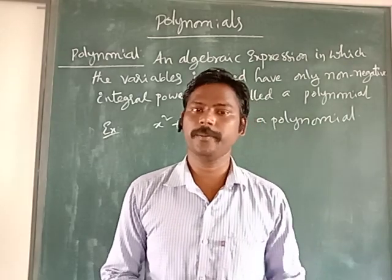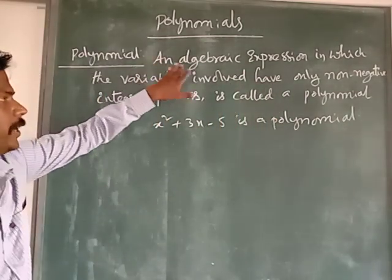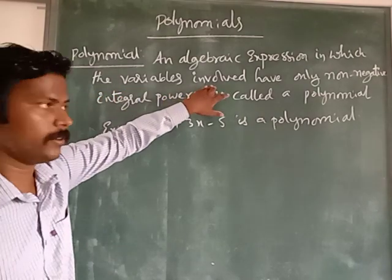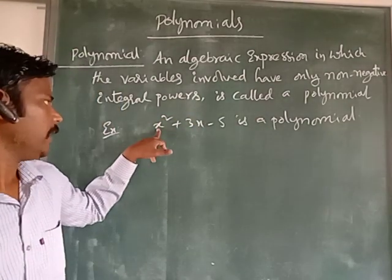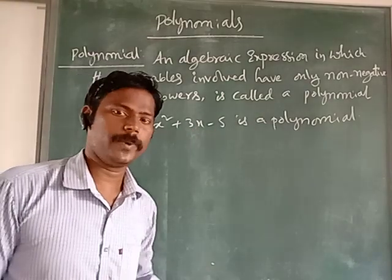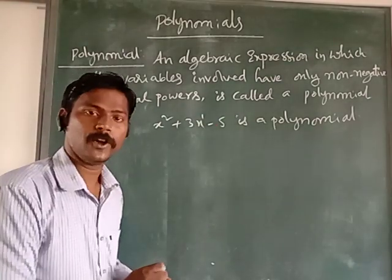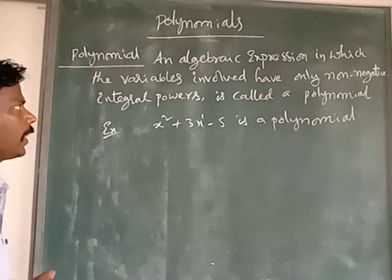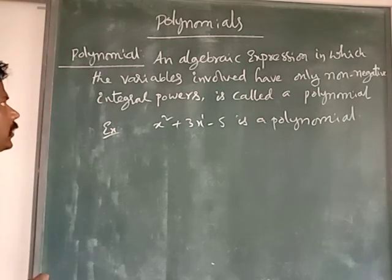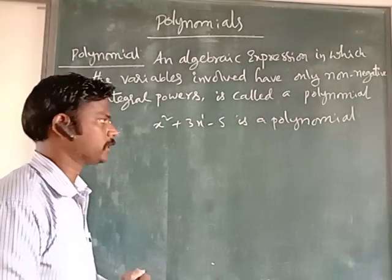Today, we will go to our main lesson: Polynomials. So what is a polynomial? An algebraic expression in which the variables involved have only non-negative integral powers is called a polynomial. For example, x² + 3x − 5 is a polynomial. Here x has power 2, and x has power 1 — both are non-negative. This type of algebraic expression is called a polynomial.